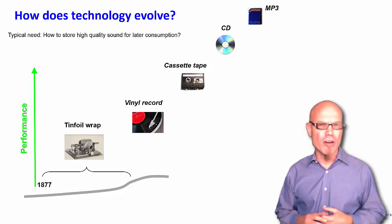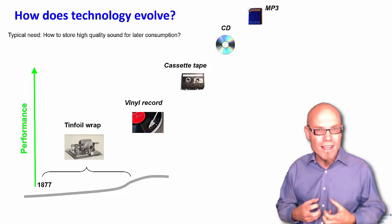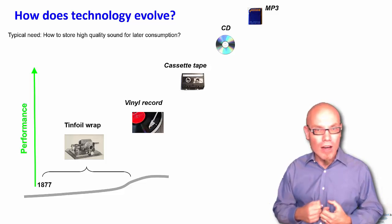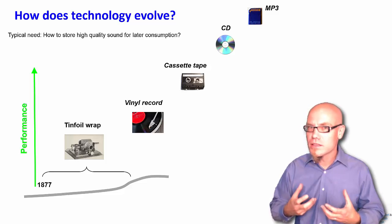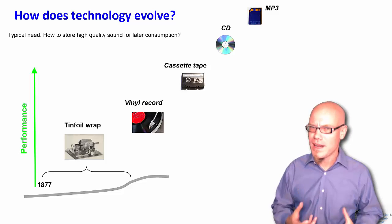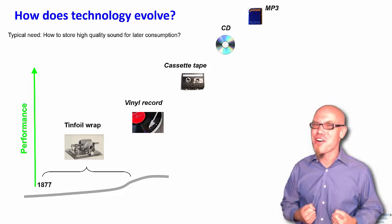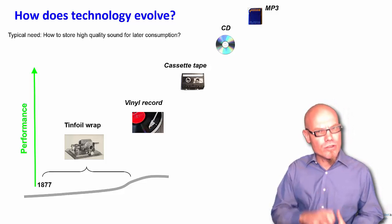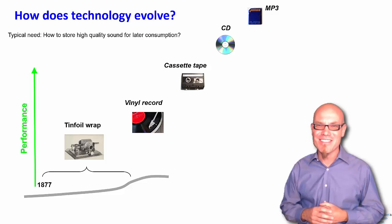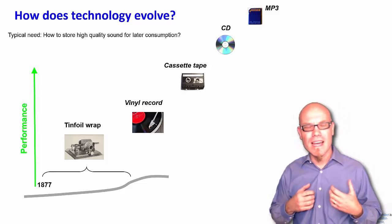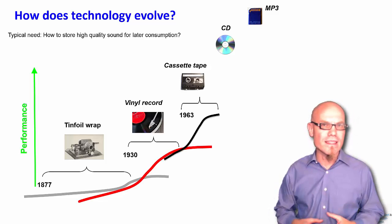As a first step, let's map it out empirically. So in 1877, Edison invented the tinfoil wrap, the first time we could store audio for later consumption. Before that, if you wanted to hear Mozart, you had to listen to Mozart playing. Actually, we don't have a record of Mozart playing because Mozart was before the tinfoil wrap. Then came the vinyl record in 1930, the cassette tape in 1963, CD in 1980s, MP3 in the 1990s.